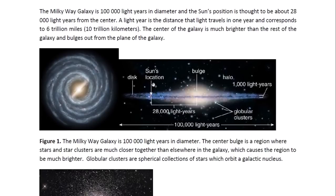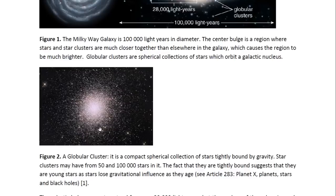What we also see are these circular points of light, and these are actually globular clusters. These are spherical collections of stars which orbit the galactic nucleus, gravitationally bound to the galaxy. This is what a globular cluster looks like. It's a compact spherical collection of stars tightly bound by gravity. Star clusters may have from 50,000 to 100,000 stars in them.